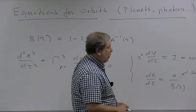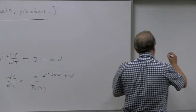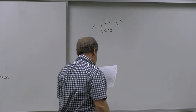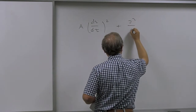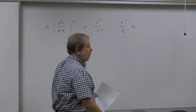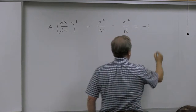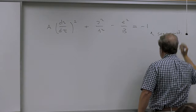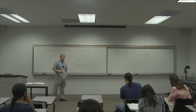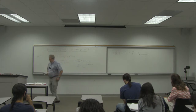The time equation tells us that dt/d tau = e / b(r), where e is some constant. It would be too restrictive to take this constant equal to one, so we just write it this way. With these two integrals of the motion, we are left with the remaining equation for the r component: a(dr/d tau)^2 + j^2/r^2 - e^2/b = -1.